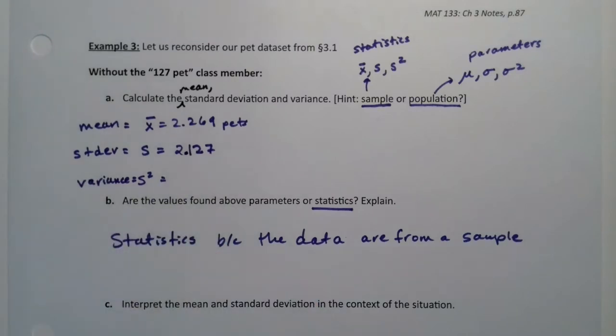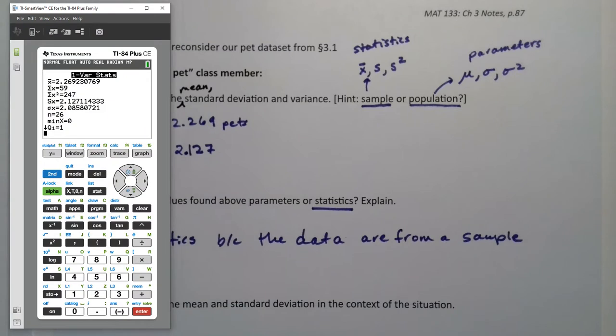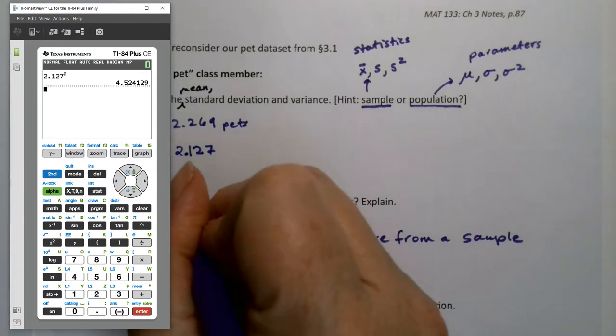What you can do is take the s value that was given and square it. So if I had the calculator, I can see there's s right there, which is 2.127. I'm going to ignore the sigma because this was not a population. So I tell the calculator, take 2.127 and square it.